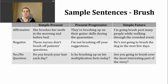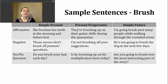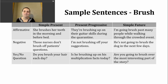Next, let's look at the present progressive. We use this verb tense to describe something that is happening right now or an action that is in progress. To make the present progressive, we use the present form of 'be' — so am, is, or are — and then the progressive form of the verb, the -ing form.